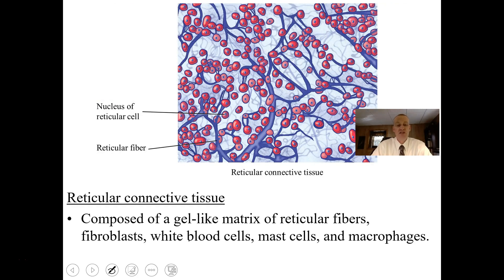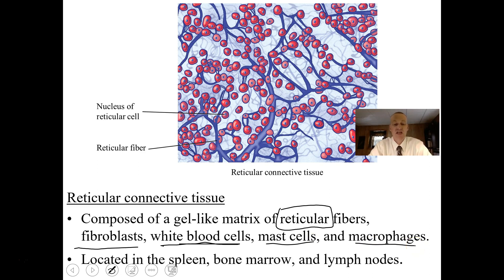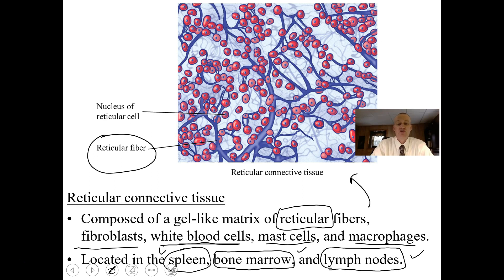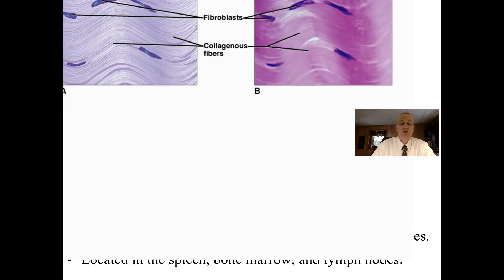We also have reticular connective tissue, composed of a gel-like matrix of reticular fibers, with lots of fibroblasts, white blood cells, mast cells, and macrophages. It's located in your spleen — an organ that's part of your immune system and a filter of your blood — as well as in your red bone marrow and lymph nodes. Each of these structures is part of the immune system, and your bone marrow produces blood cells.